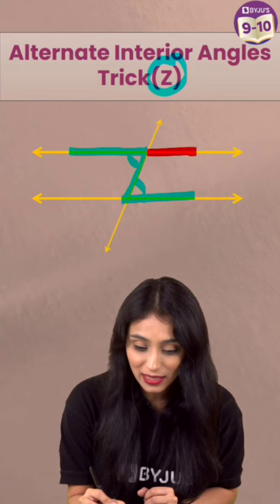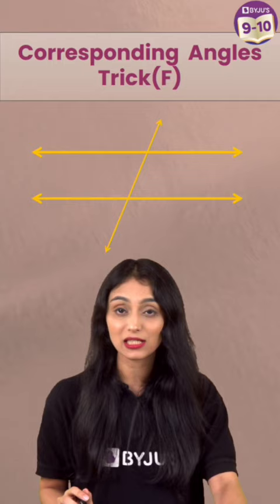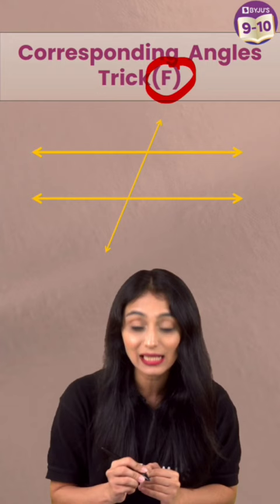Moving to the next trick for corresponding angles, so ye sab tabhi applicable hai jab lines parallel ho and they are intersected by a transversal. So corresponding angles ke liye you will look for f.